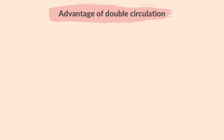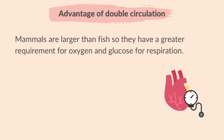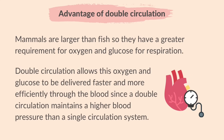What is the advantage of a double circulation? Mammals are larger than fish so they have a greater requirement for oxygen and glucose for respiration. Double circulation allows oxygen and glucose to be delivered faster and more efficiently through the blood, since a double circulation maintains a higher blood pressure than a single circulation system.